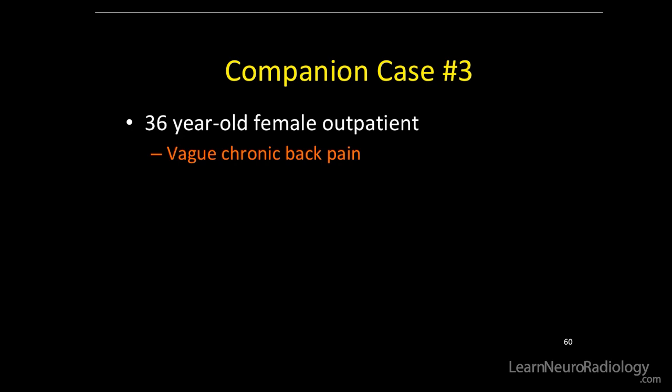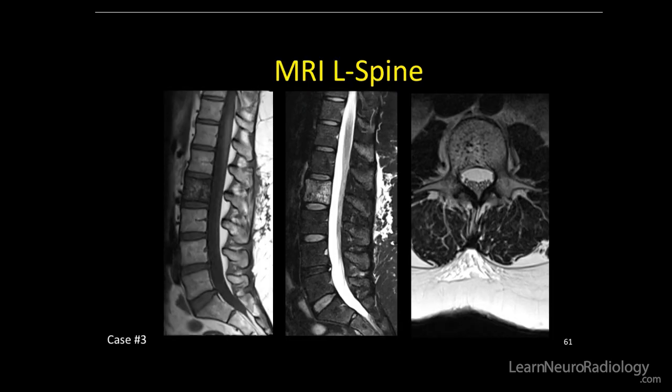Companion case number three: a 36-year-old female outpatient with vague chronic back pain. Here's the MRI of the lumbar spine. Sagittal T1 without contrast — the lesion is dark. Sagittal STIR, axial T2 — the lesion is bright with some internal hypointense foci in there.